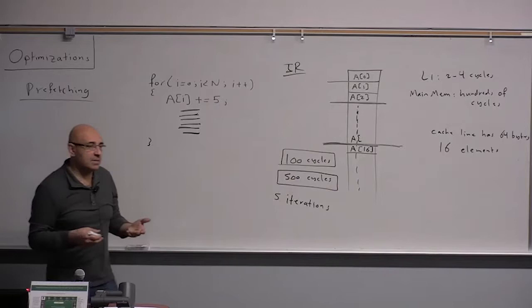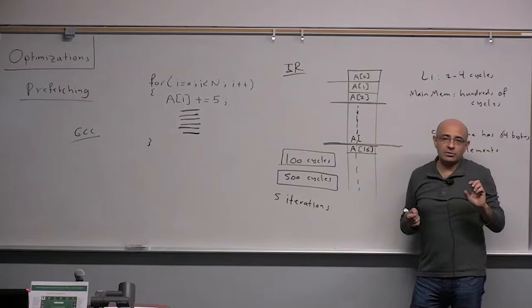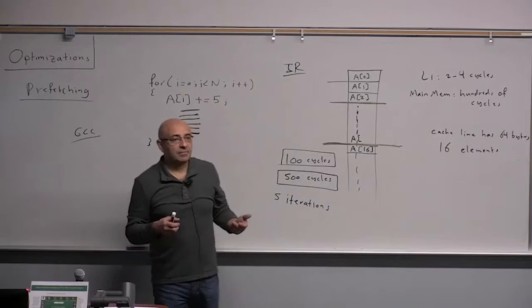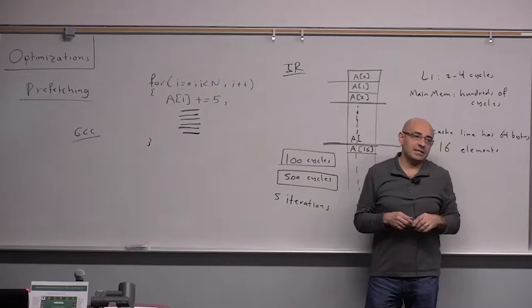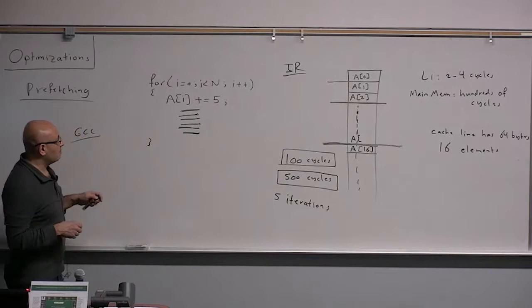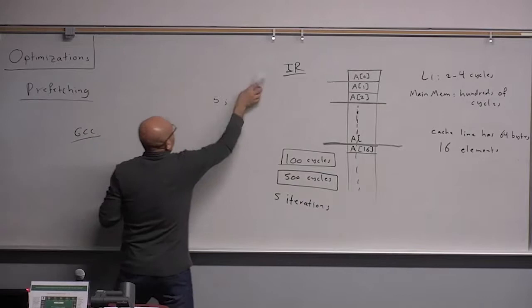If a loop is executed a small number of times, it's not an interesting loop anyway, because whatever gets executed inside that loop is not executed frequently enough to affect performance. When we optimize performance, we are always more interested in code that gets executed more frequently — loops that are inside deeper loops and that have higher frequencies of execution. This is about prefetching; let's now talk about another compiler optimization.